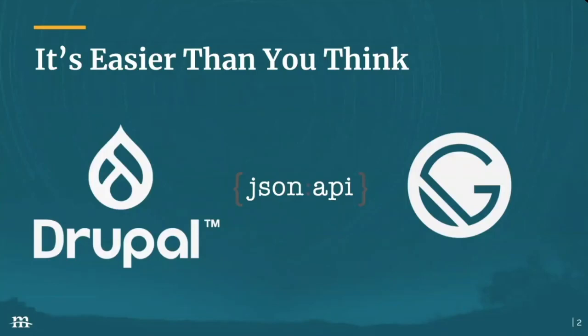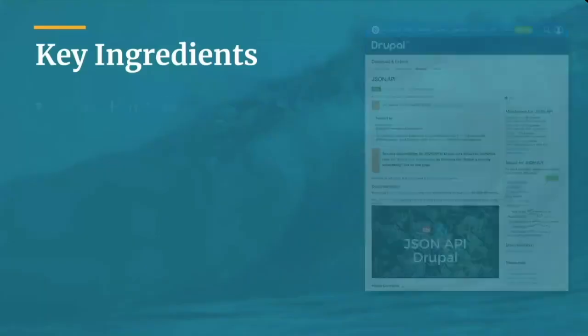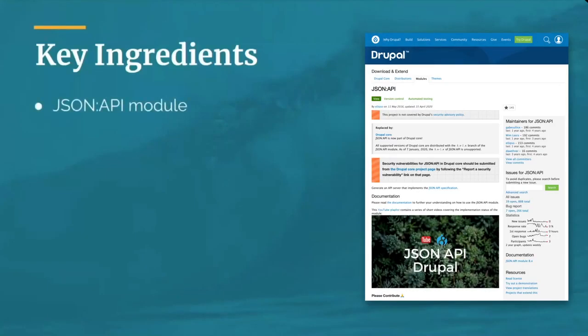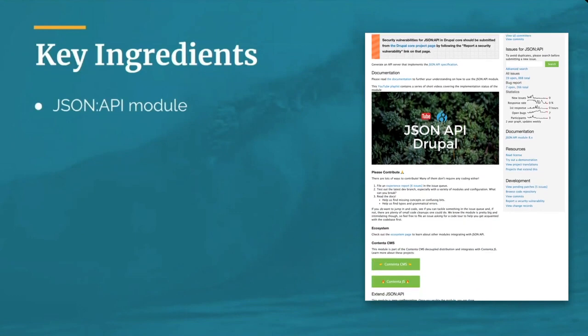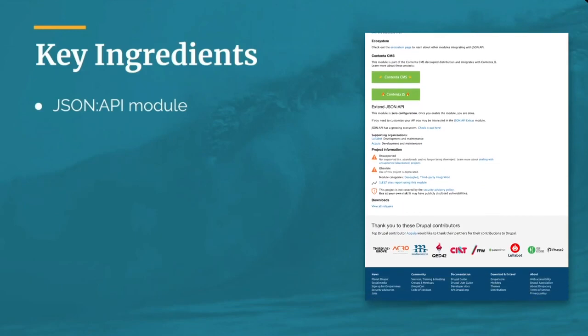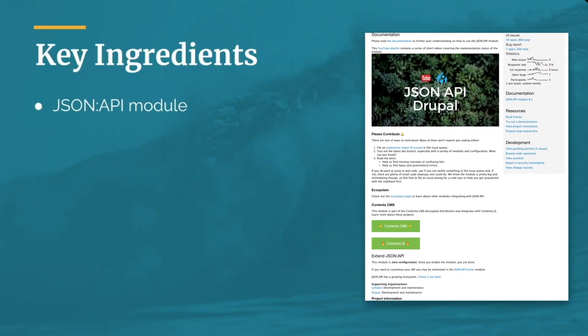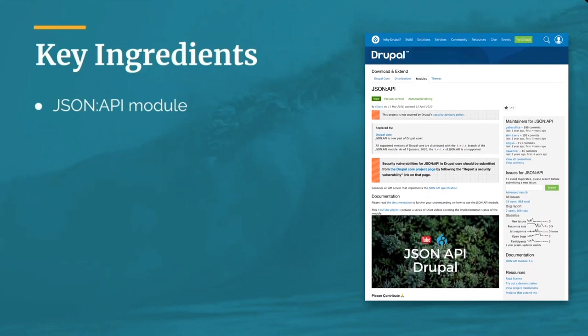The JSON API module is part of Drupal Core and is a key ingredient to transforming your application into a decoupled solution. This module was added to Drupal 8 core and is also present in Drupal 9. The JSON API module simply exposes all of your content in the JSON API format so that it can then be consumed by other applications, including Gatsby JS.